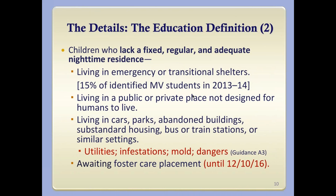Other situations covered under the education definition include emergency or transitional housing — 15% of identified students — and public or private places such as cars and parks. The Department of Education's guidance this year gave very helpful clarification on substandard housing: utilities, infestations, mold, dangerous situations — things a school district would look at to determine that housing is so substandard it qualifies as homeless under McKinney-Vento.